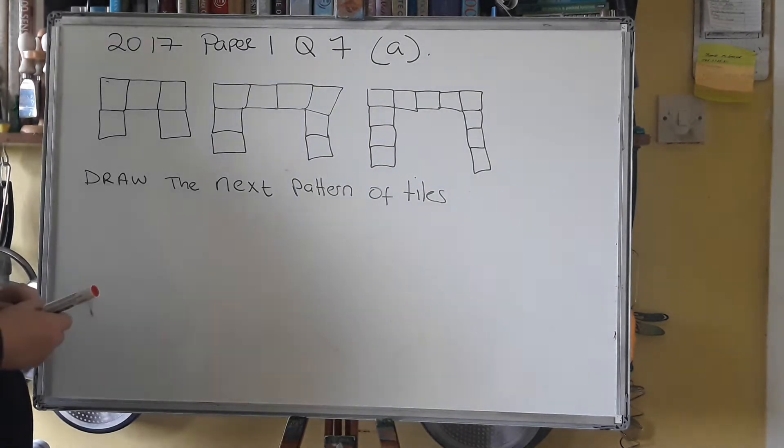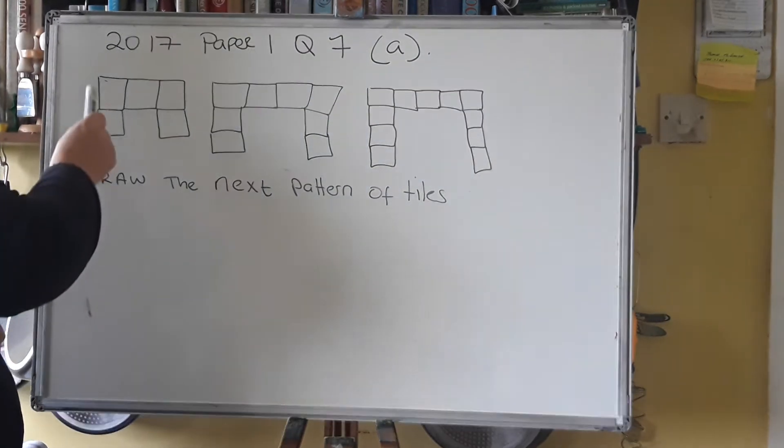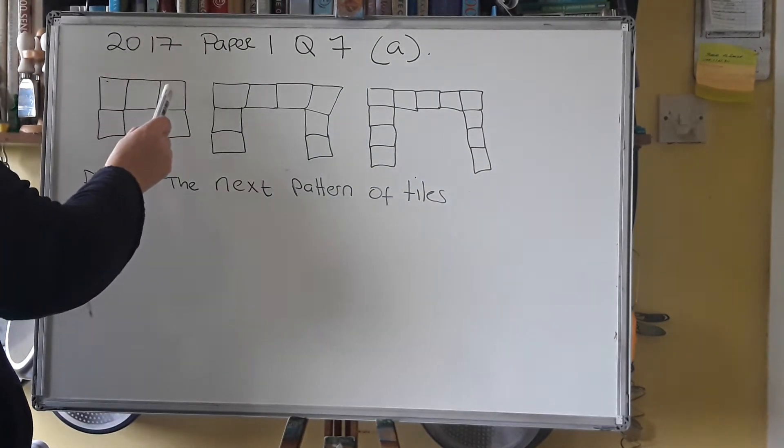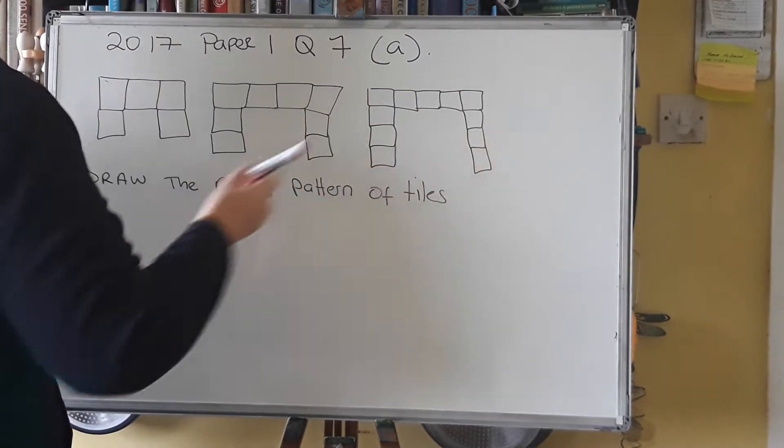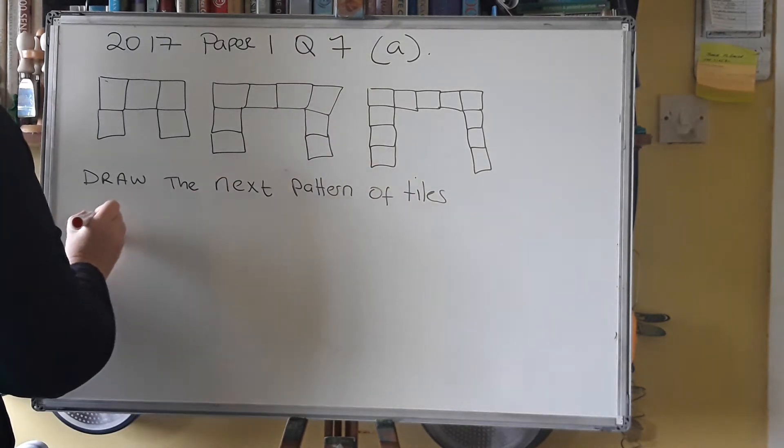So what you're looking for is how does it change. So here is 3, here is 4, here is 5. So the next one, the top row is going to be 6.